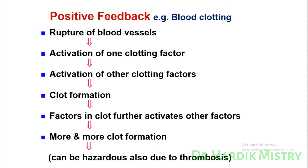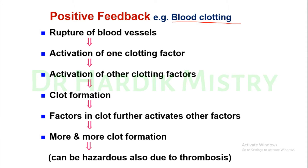Another example of the positive feedback loop is blood clotting. When there is a rupture of a blood vessel, one clotting factor is activated first, which then activates other clotting factors in the vicinity of the rupture. All these clotting factors work together to form a clot. Factors in the clot further activate other factors, causing more and more clot formation until the rupture of the blood vessel is sealed.